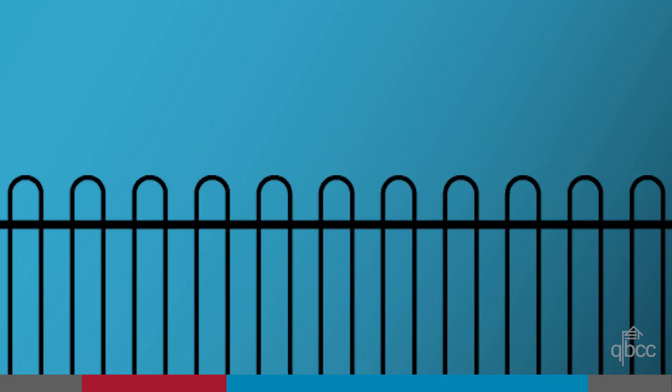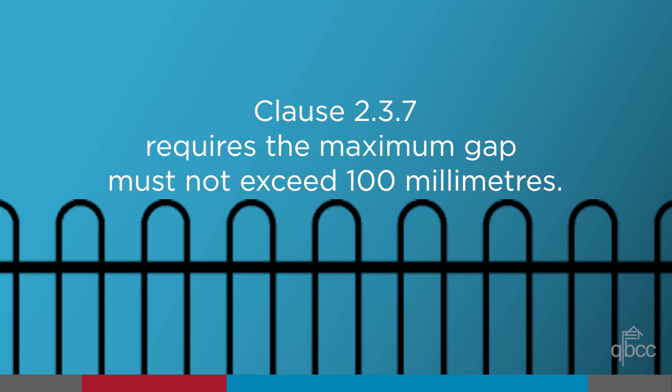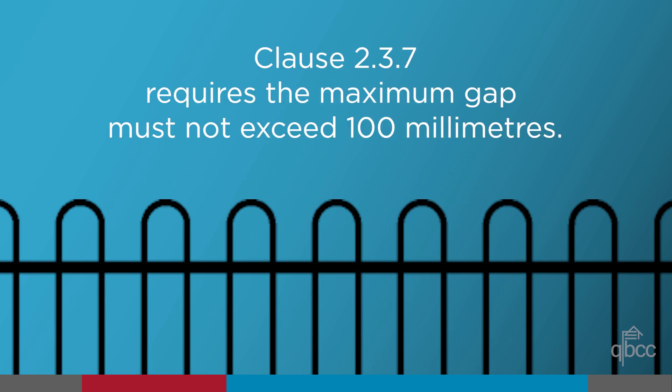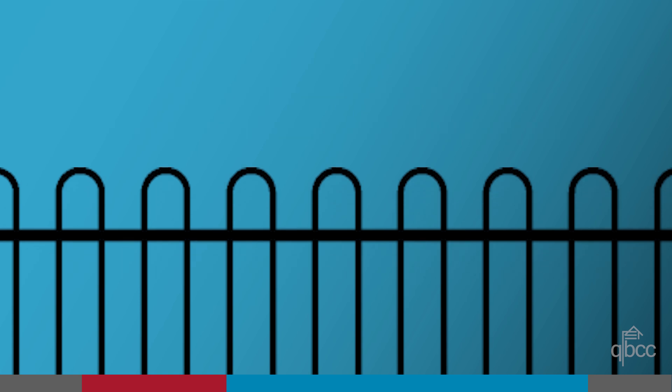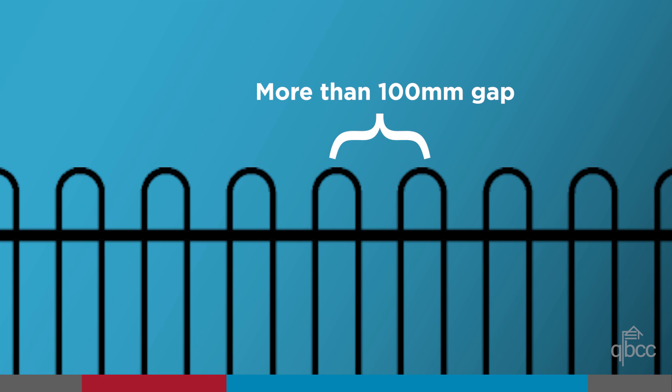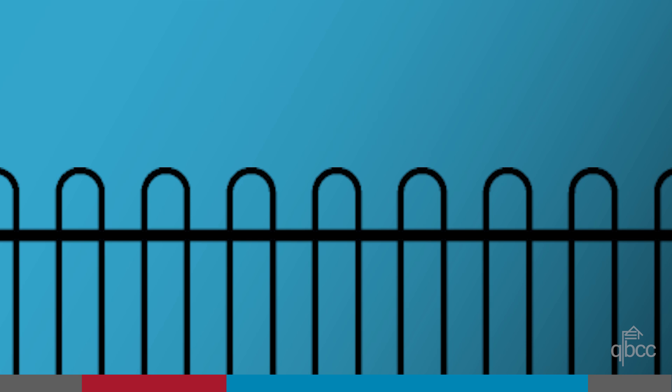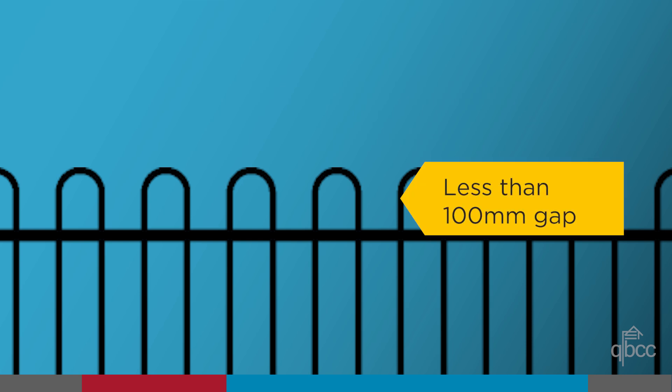For curved top fences, clause 2.3.7 requires the maximum gap between the vertical members must not exceed 100 millimetres at any point. The rounding at the top of a fence may create gaps greater than 100 millimetres. Therefore, the measurement should be taken at the point where curvature begins at the top of the fence, where the gap does not exceed 100 millimetres.